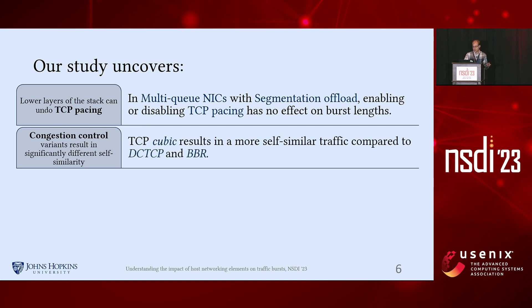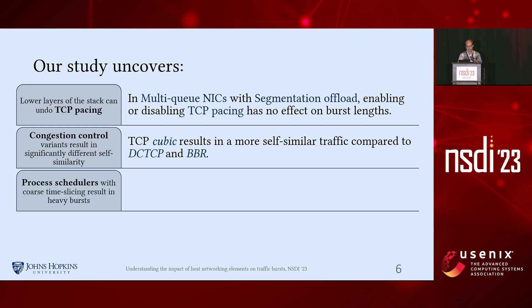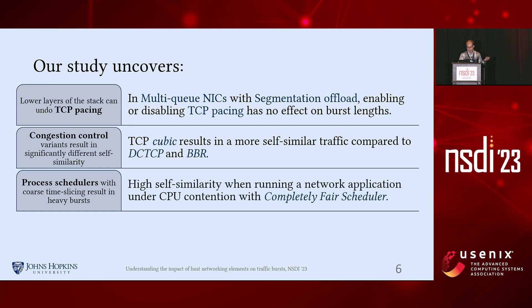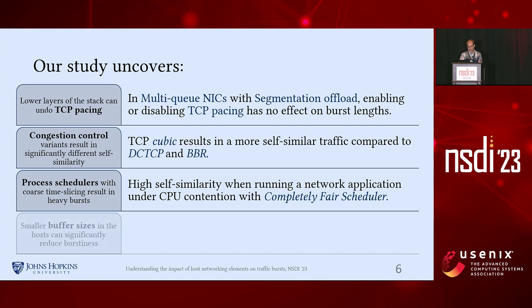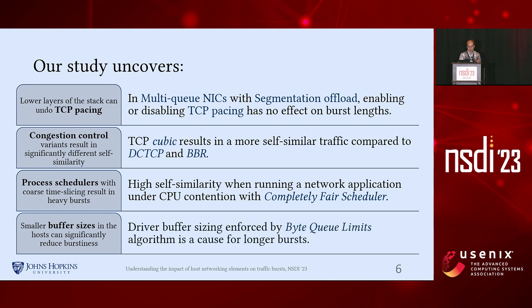Valinor can also demonstrate how congestion control variants produce different burstiness across timescales. For example, TCP Cubic results in a higher degree of self-similarity compared to DC-TCP or BBR. Our system reveals that even the choice of process scheduling matters, as process scheduling with coarse time slicing can lead to higher self-similarity. Finally, we investigate the impact of driver buffer sizing on creating bursts and show that the byte queue limits algorithm in Linux causes heavier bursts.